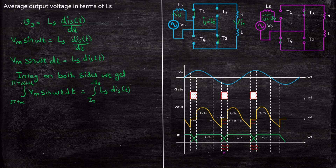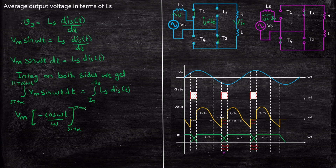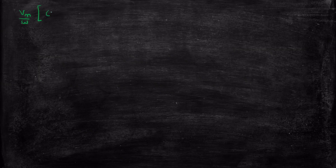Once you arrive at this point, it is just mathematically substituting and solving. Integration of sine is minus cos(omega t). Integrating omega t with respect to t leaves omega in the denominator, with limits pi plus alpha to pi plus alpha plus mu. That equals Ls times Is(t) evaluated from Iout to minus Iout. Further simplifying, we get Vm by omega times [cos(alpha plus mu) minus cos(alpha)], substituting the upper and lower limits. You will also have a cos(A+B) type relationship to expand and simplify.